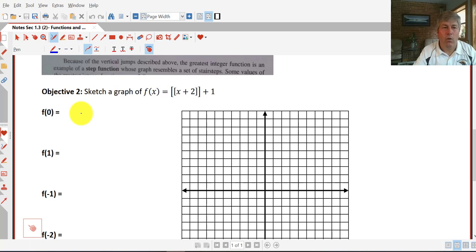So f(0), we'll put that into our function of [[x + 2]] + 1. Our answers are only going to be integers. So 0 plus 2, and our greatest integer function plus 1 is just going to be 2 plus 1, or 3.